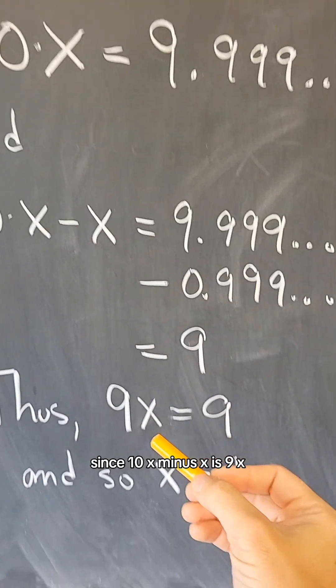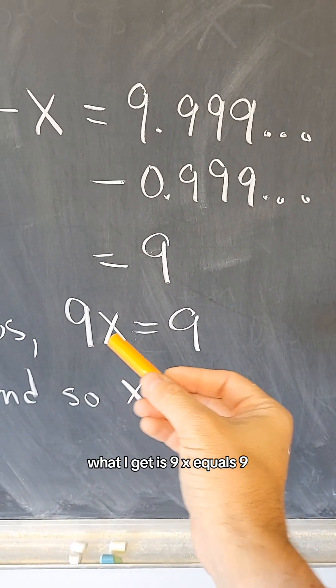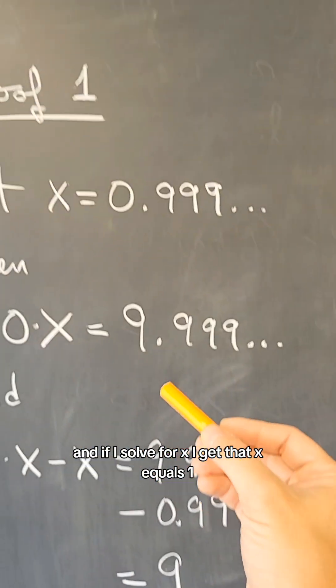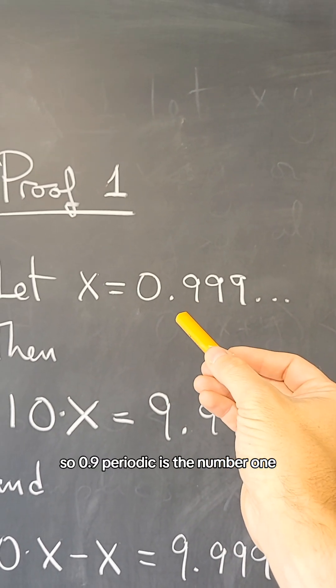Since 10x minus x is 9x, what I get is 9x equals 9, and if I solve for x, I get that x equals 1. So 0.9 periodic is the number 1.